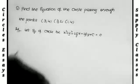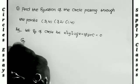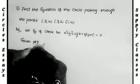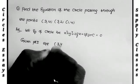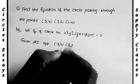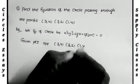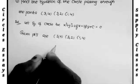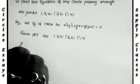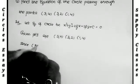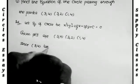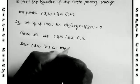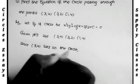Next, we write the given points. The given points are (3, 4), (3, 2), and (1, 4). We substitute these 3 points into the circle equation to find 3 equations. First, substituting the point (3, 4). Since (3, 4) lies on the circle, this point is a point on the circle, so we substitute this point in the circle equation.